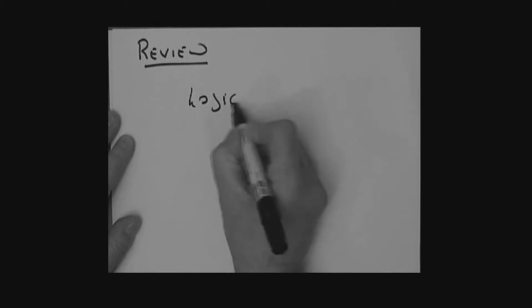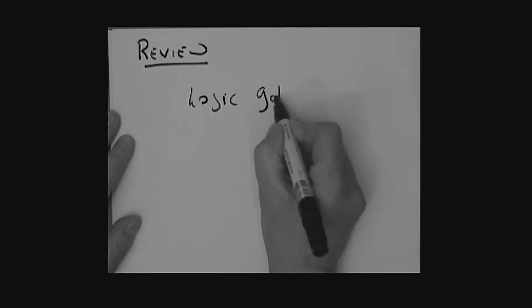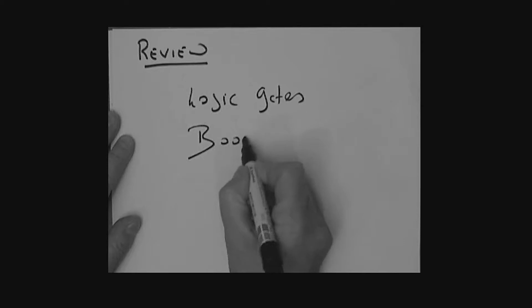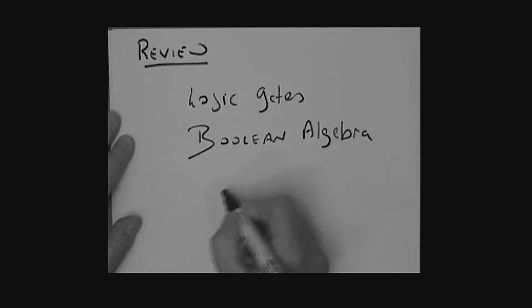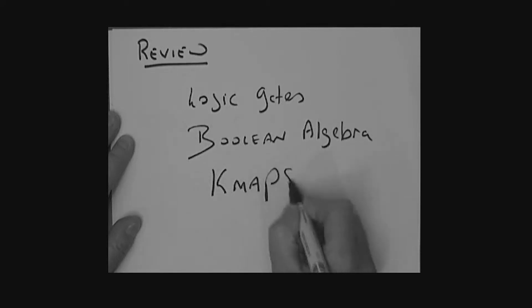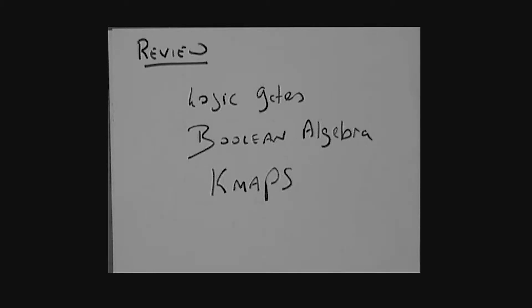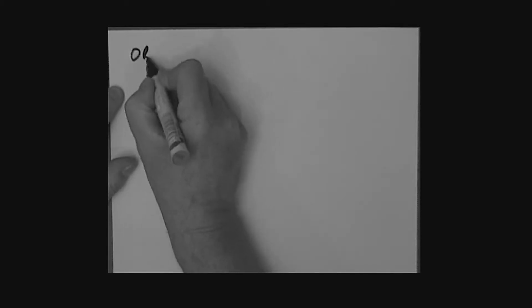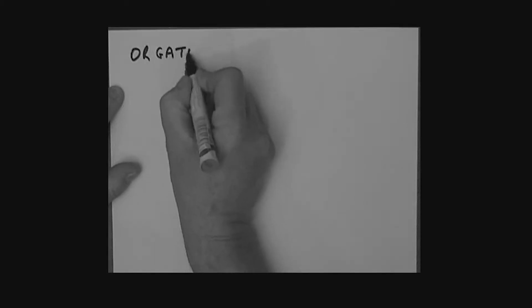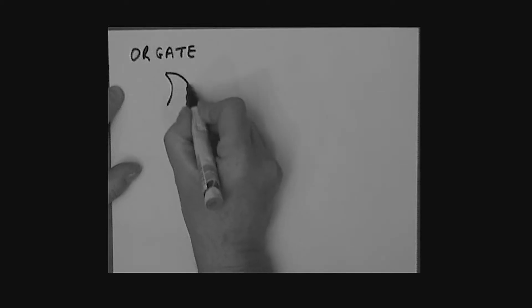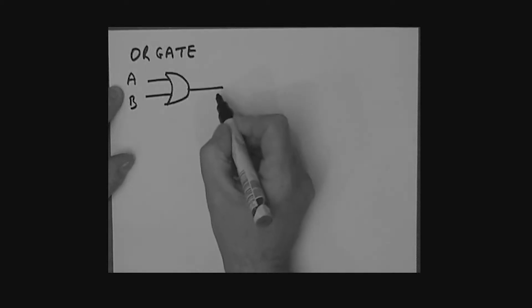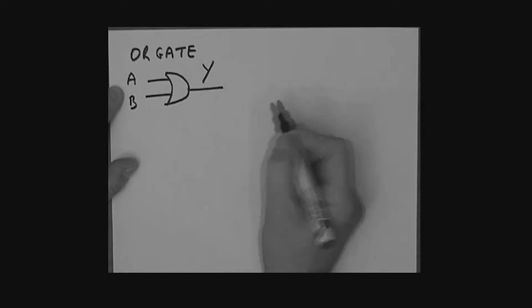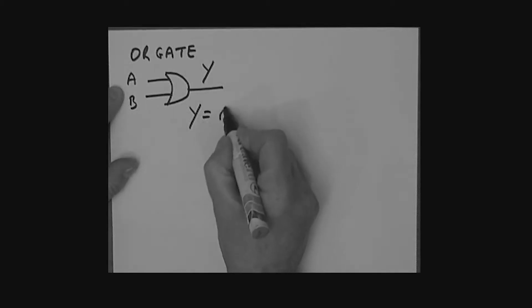We're going to look at logic gates, boolean algebra, and K-maps. Let's start by considering the OR gate. We'll look at the symbol, two inputs A and B, and an output Y. Y is equal to A or B.